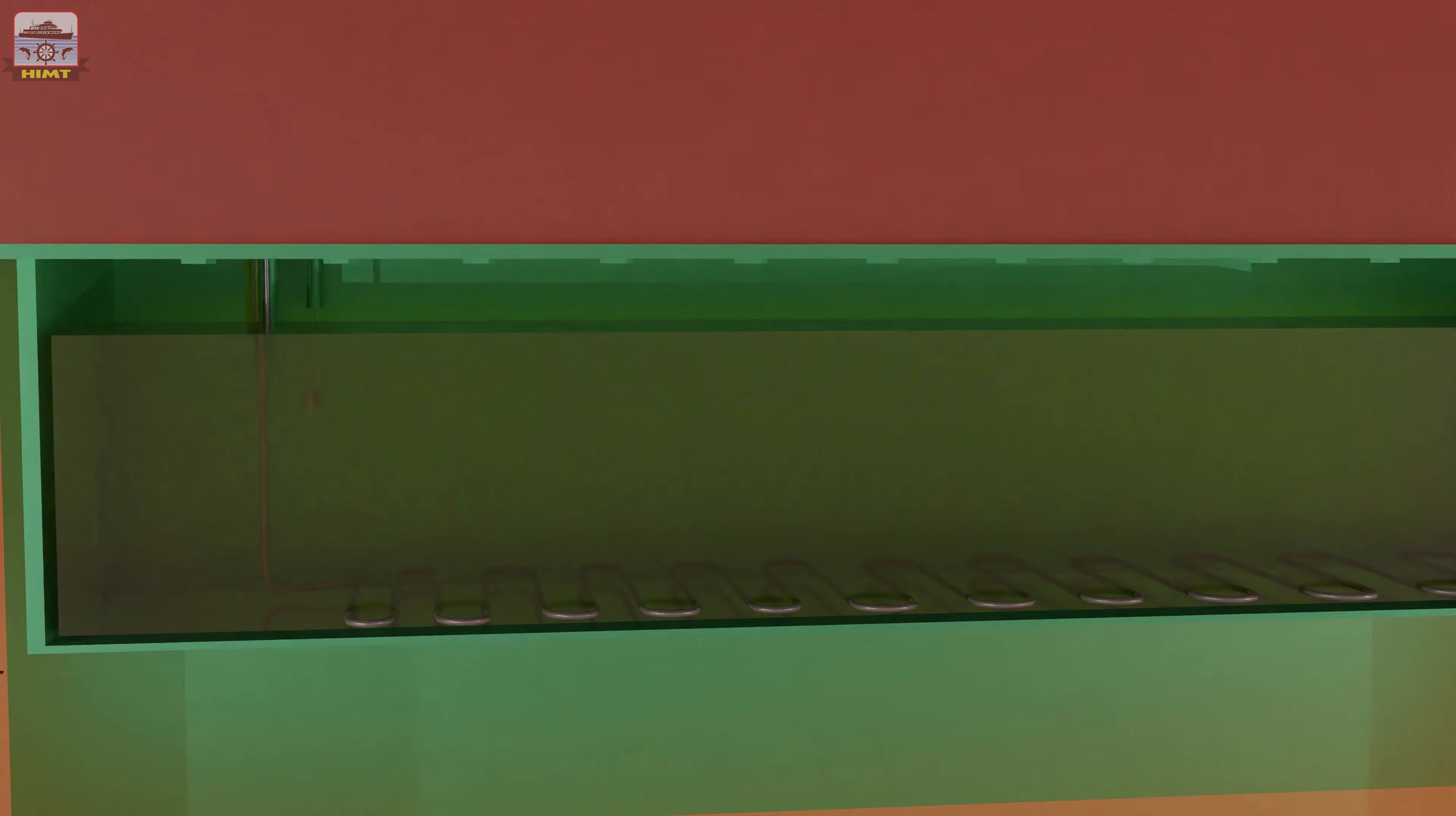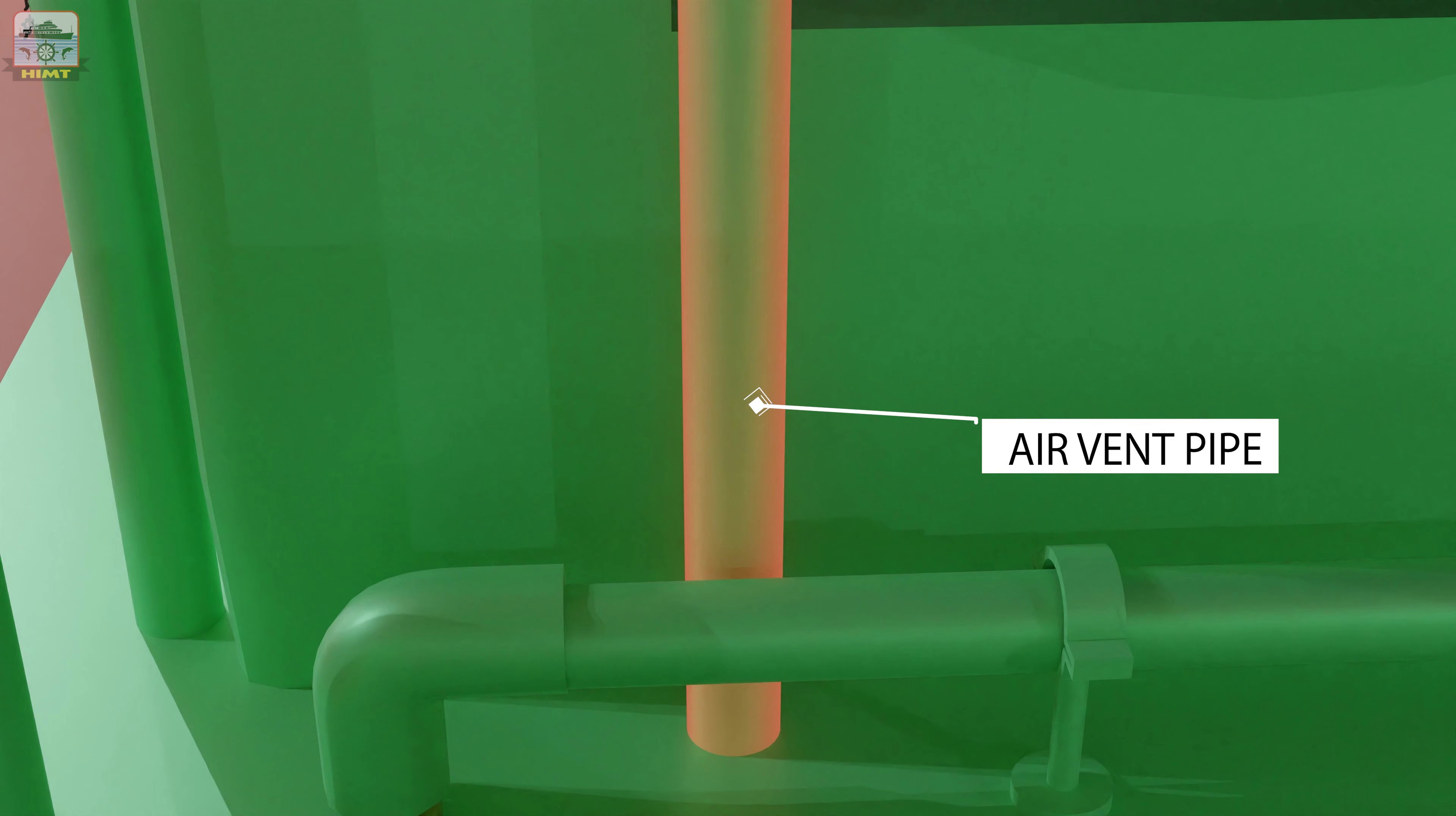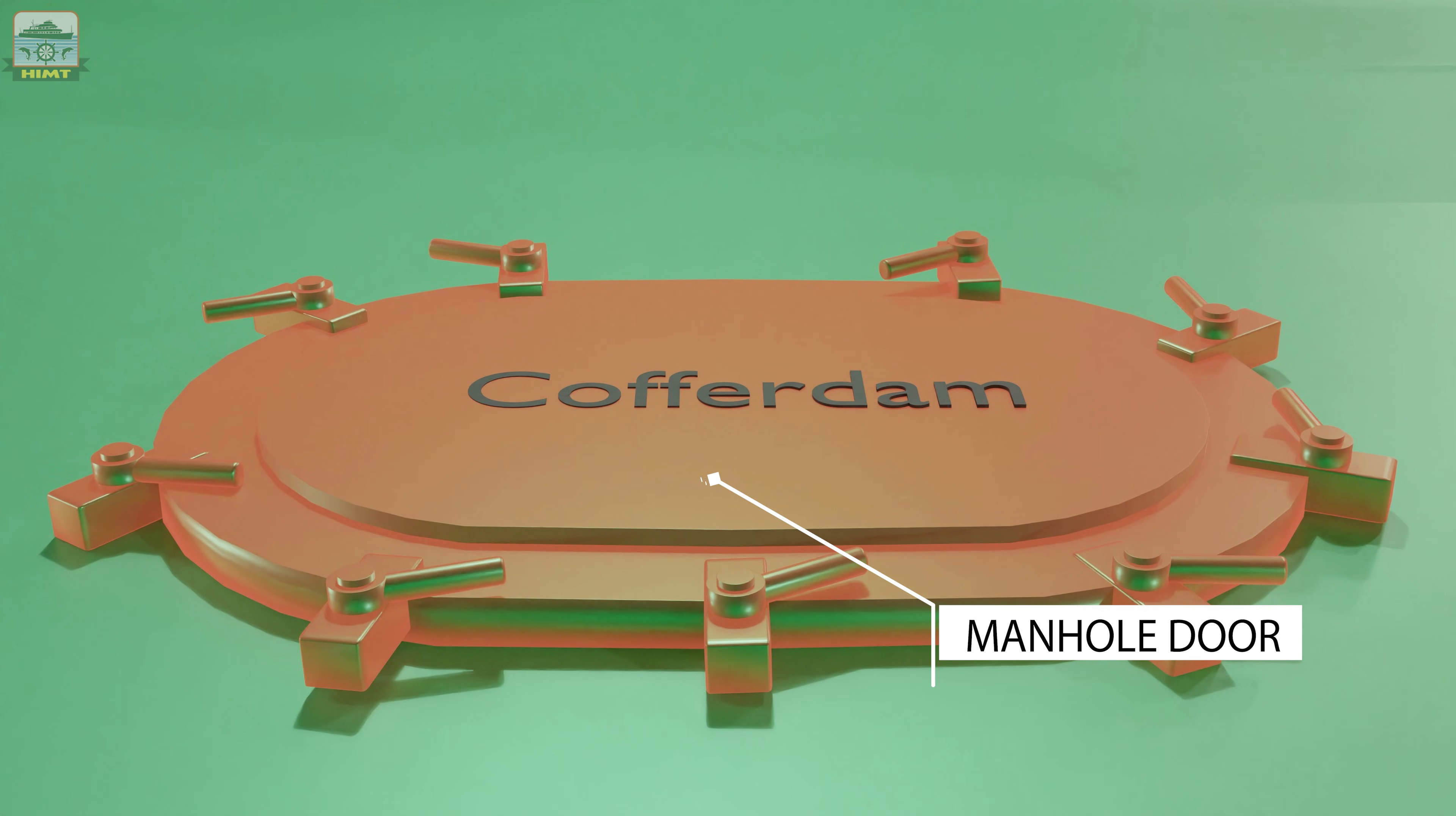The main engine lube oil sump is also fitted with a level gauge. The sounding pipe is fitted on top with a self-closing cock. The sump is fitted with an air vent pipe for breathing, a steam heating coil to maintain lube oil temperature when the engine is stopped, and manhole doors for access into the sump and cofferdam for cleaning and inspection.